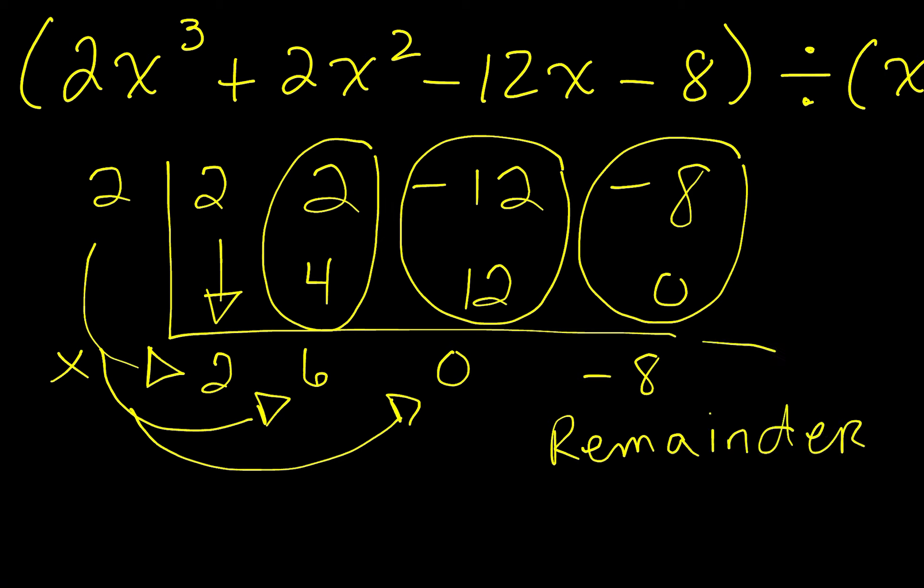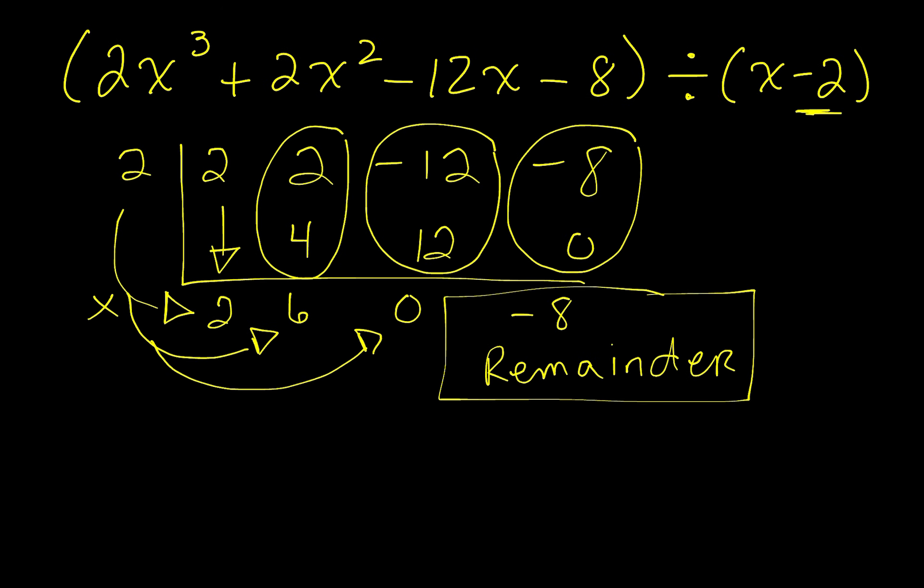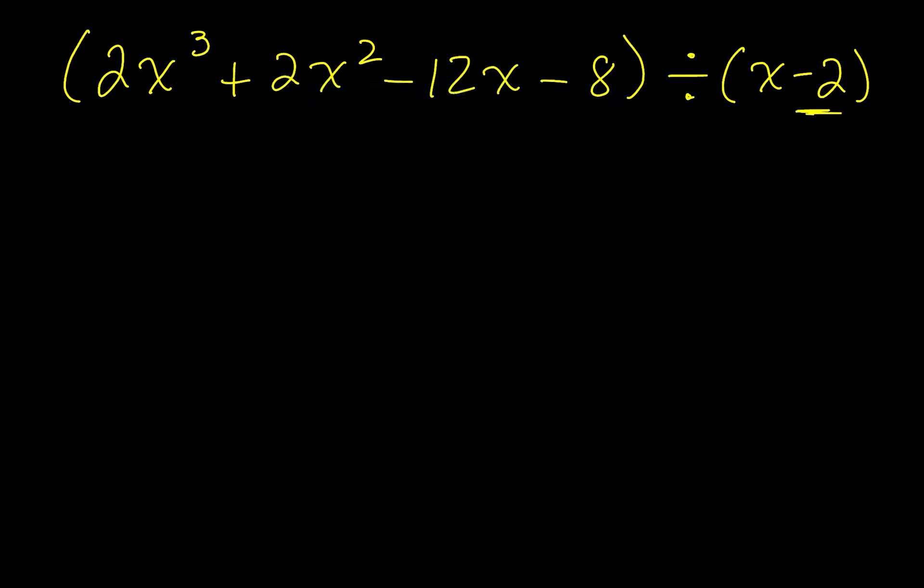So now what we want to do is we want to use the evaluation method and see if we can get negative 8 as a remainder here. Let's erase this. So now what we have to do is we have to take the binomial, which is x minus 2, and we want to set it equal to 0. x minus 2 equals 0. You add to the other side. That's why we take the opposite sign.